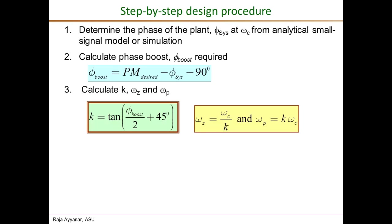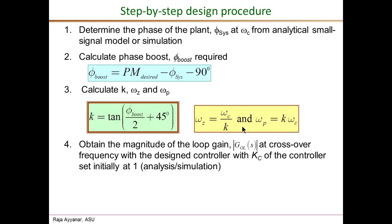For Type 2 design, once the required phase boost is between 0 and 90 degrees, use the expression derived: K equals tan of (phi_boost/2 + 45 degrees). Then omega_z equals omega_c over K and omega_p equals K times omega_c. For Type 2 we need to design three parameters: omega_z, omega_p — now determined — and the constant Kc. Kc must be chosen to make the complete loop gain exactly one (0 dB) at omega_c.